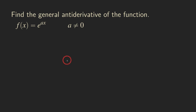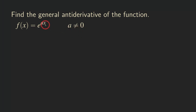Let's talk about finding the general antiderivative of the function of the form e to the ax, where a is not equal to 0, because if a is equal to 0, this is not an exponential function anymore. 0 times x is 0, and e to the 0 is 1, so we are finding the general antiderivative of a constant function.